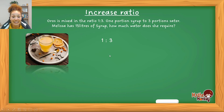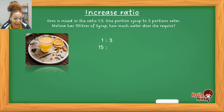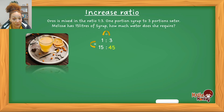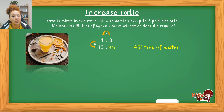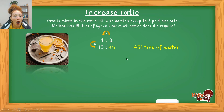Since Melissa has 15 litres of syrup, place the 15 under the 1 (which represents syrup). The LVN method says: always work anti-clockwise, dividing first then multiplying. So you calculate 3 ÷ 1 × 15, giving an answer of 45. That means if you have 15 litres of syrup, you need 45 litres of water. Notice this is actually the opposite of simplifying.